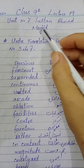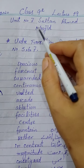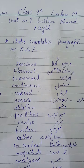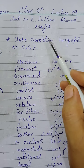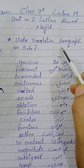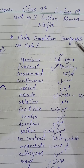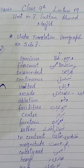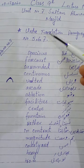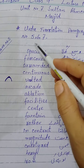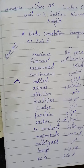Good morning 9th class. Hope you all are fine. Today it's our lecture number 19, that is unit number 7 — Sultan Ahmed Masjid. Last day you translated paragraph number 1, 2, 3 and 4 into Urdu. Hope you have learned and practiced the Urdu translation of these four paragraphs. Today we are going to start with paragraph number 5, and we will translate paragraphs 5, 6 and 7 today.